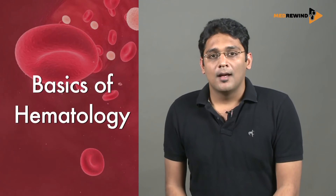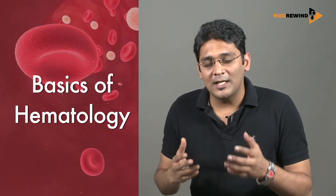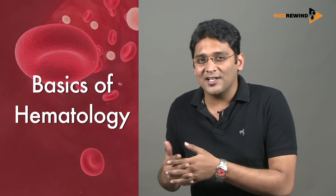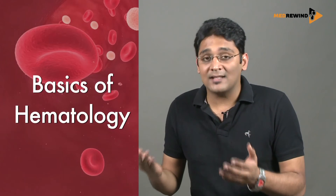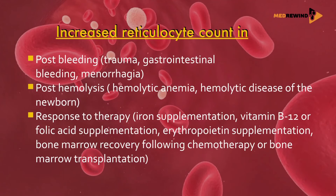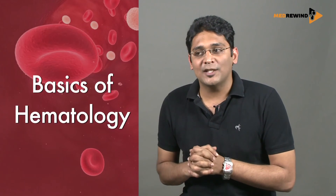Reticulocytes give a sense of how the hemopoietic system is working under stress. The normal reticulocyte count is 0.5 to 2.5 percent. In hemolytic anemias, when the body has time to compensate, retic counts are increased. In nutritional deficiency anemias, the body doesn't have time to compensate, so retic counts go low.